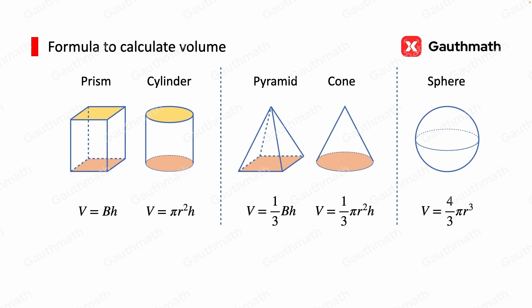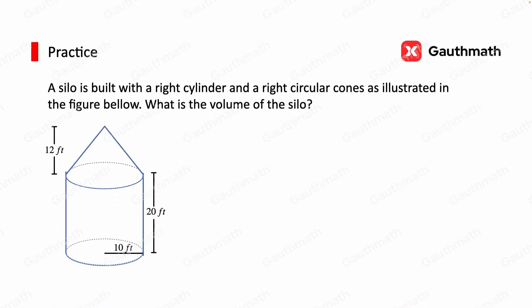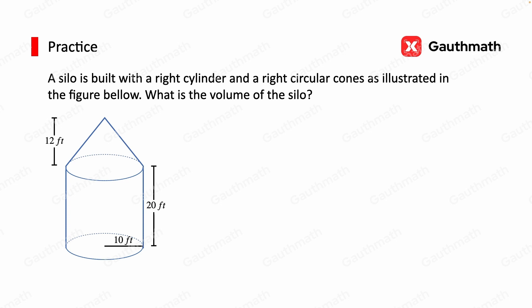Let's now try a practice problem to see how the formulas can help us to solve volume problems in the SAT exam. A silo is built with a right cylinder and a right circular cone as illustrated in the figure below. What is the volume of the silo?